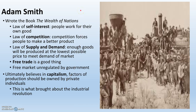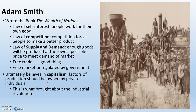Adam Smith writes a book called The Wealth of Nations, theorizing about the success of the Industrial Revolution. His book talks about several laws: the law of self-interest — people will work for their own good; the law of competition — competition forces people to make a better product; the law of supply and demand — enough goods will be produced at the lowest possible price to meet market demand; and the idea that free trade is a good thing and the free market should be unregulated by government. Ultimately, if you take all these laws together, this is an idea called capitalism — the idea that the factors of production should be owned by private individuals, which is kind of what we have in the United States today.